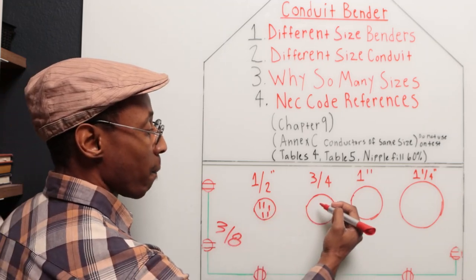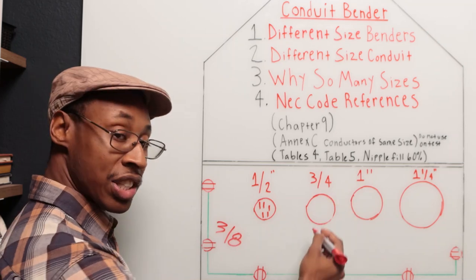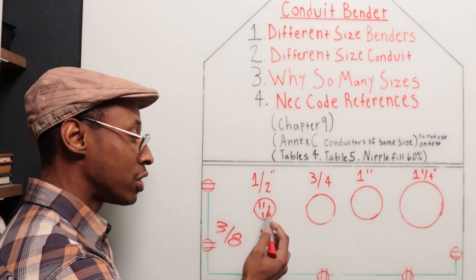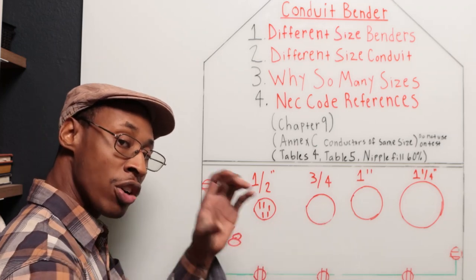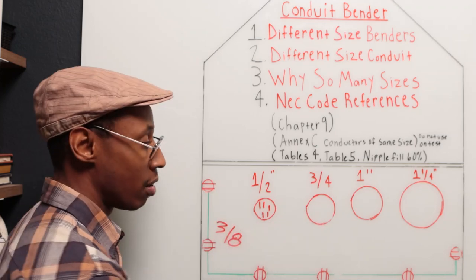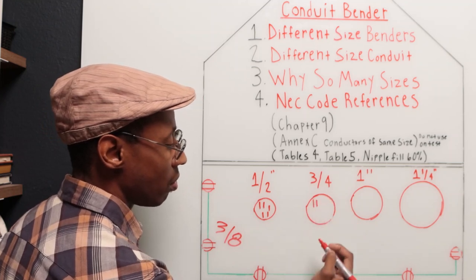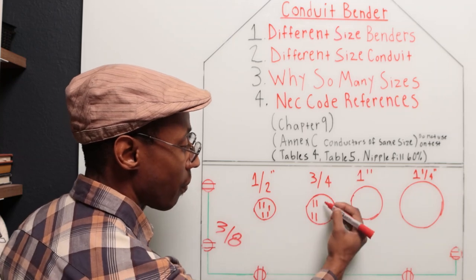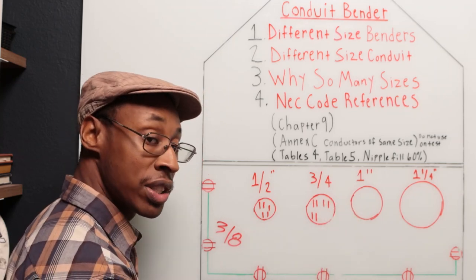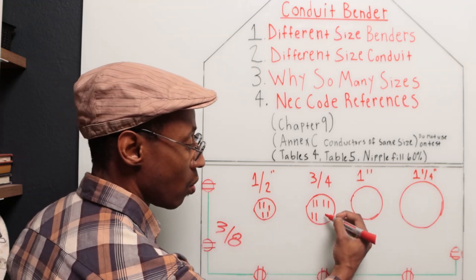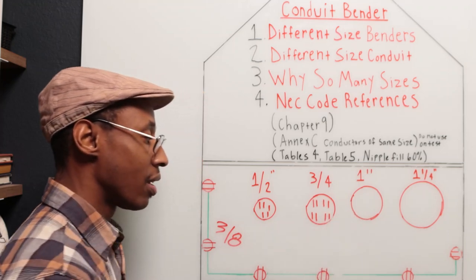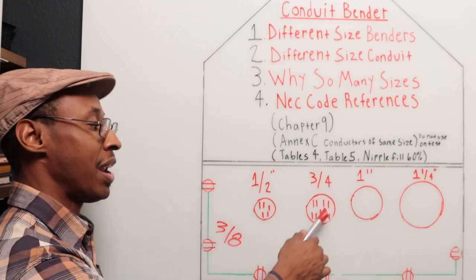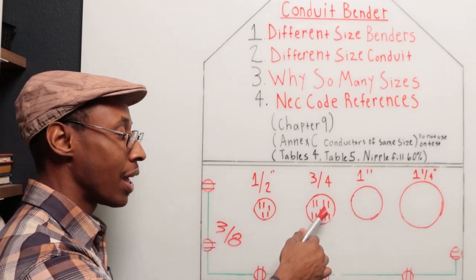So now for this next three quarter conduit, you can get more than four of those same size wires in this pipe because it's a larger size inner diameter. So let's go one, two. That's one circuit. One, two. That's another circuit. One, two. That's three circuits, six wires. One, two. That's eight wires now. And a ground wire. One ground. So now you have nine wires in this conduit.